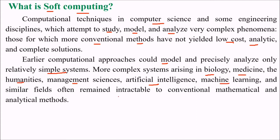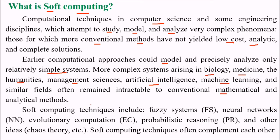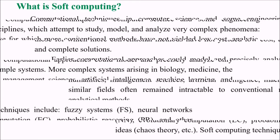Soft computing techniques include fuzzy logic or fuzzy systems, neural networks, evolutionary computation, probabilistic reasoning, and other ideas like chaos theory. These software computing techniques are often found complementing each other.